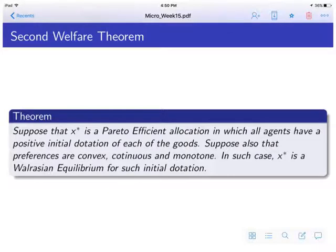Okay, so this is our second welfare theorem. As you can see, it's quite longer than the first one. First we are going to suppose that we are going to assume that x is Pareto-efficient. We are going to assume some things more. One of them is that all agents have a positive initial endowment of the goods, so everyone has something about each good. And preferences are going to be convex, continuous, and monotone.